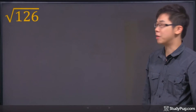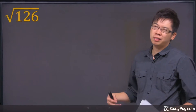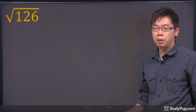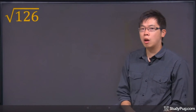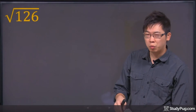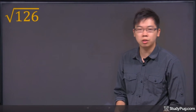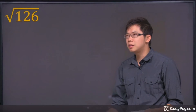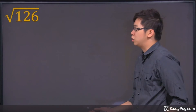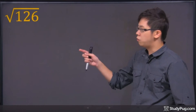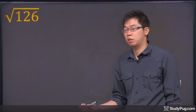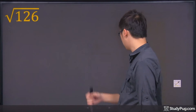Welcome to this question. It says calculate the following radicals. If you do have a calculator, you just punch in root 126 and get the answer right away. But let's say you don't have a calculator and the teacher said you can't use it. So if you're going to simplify this, you're going to have to use prime factorization on the side.